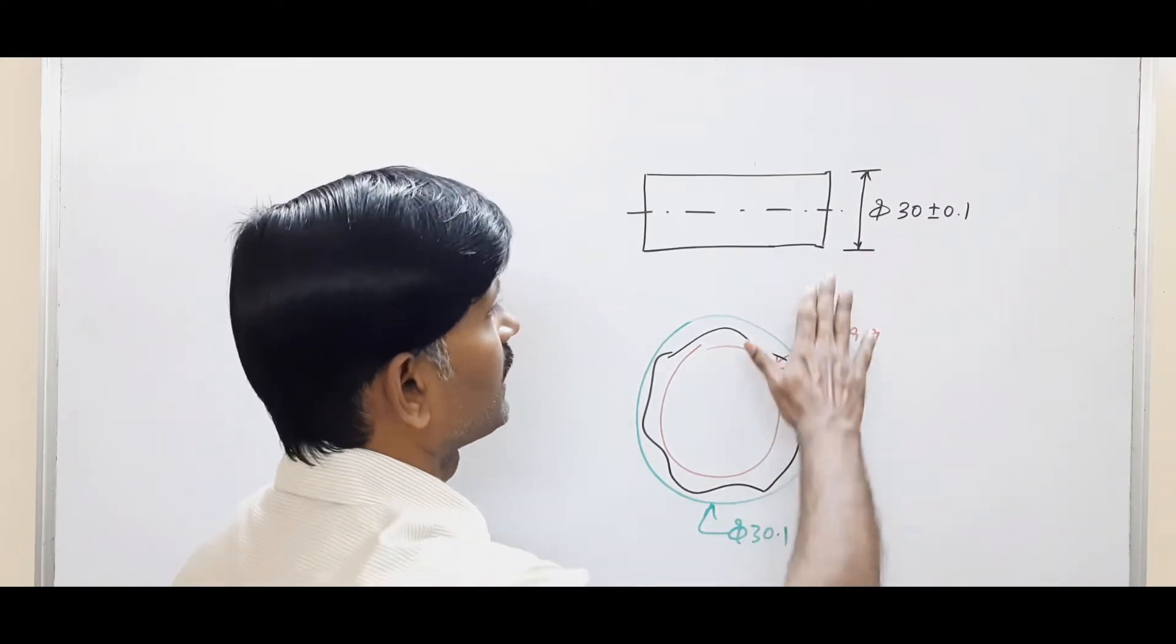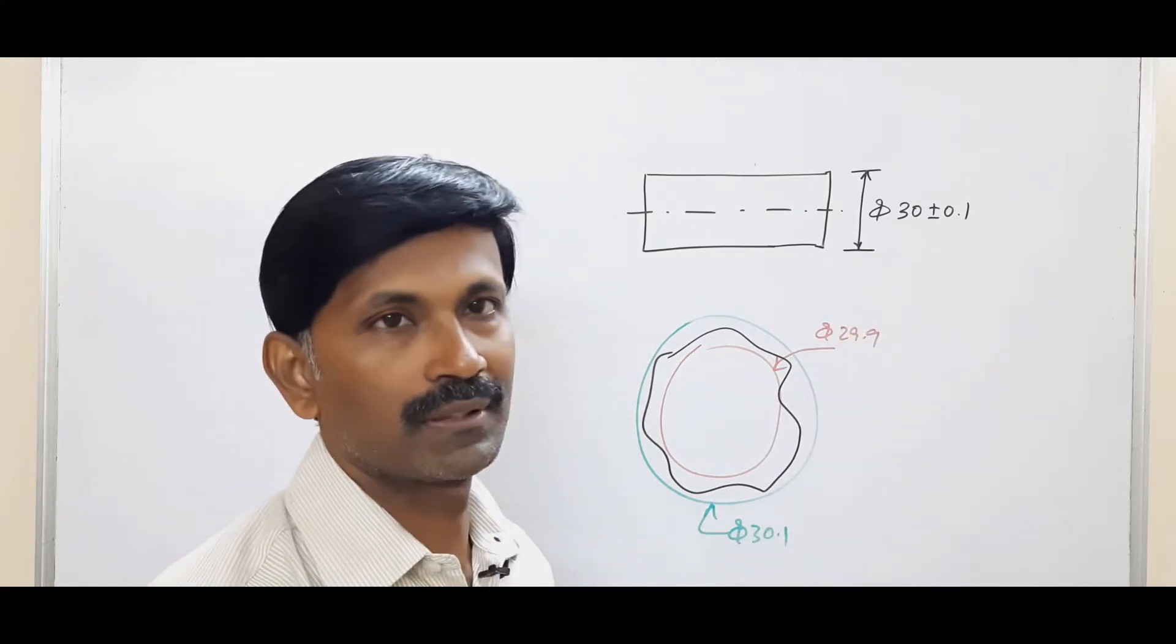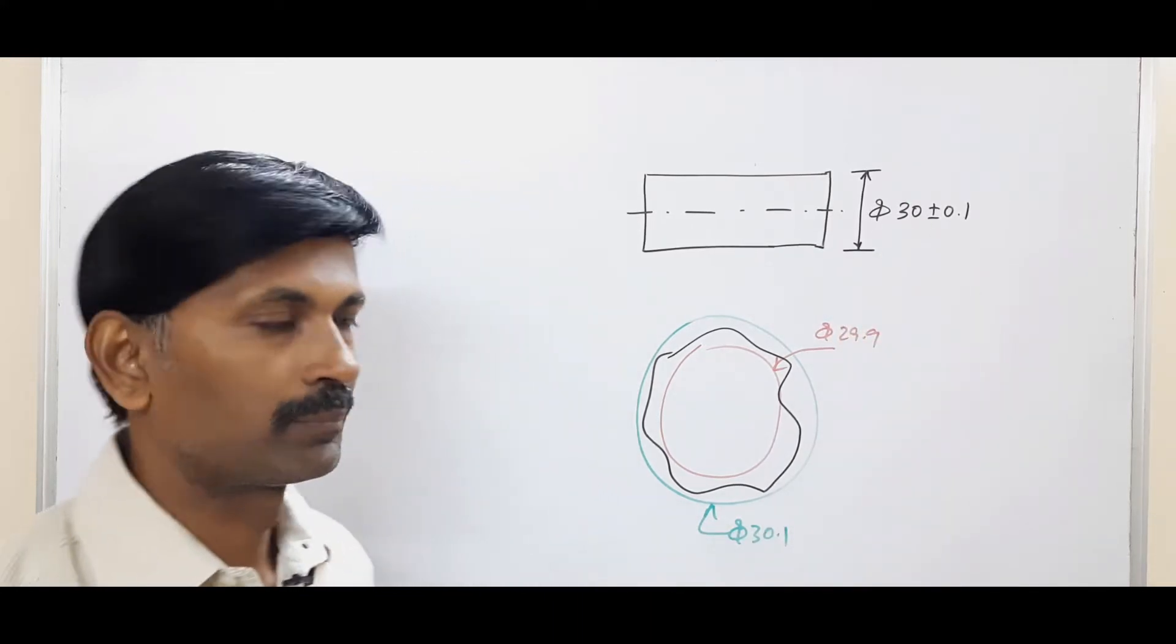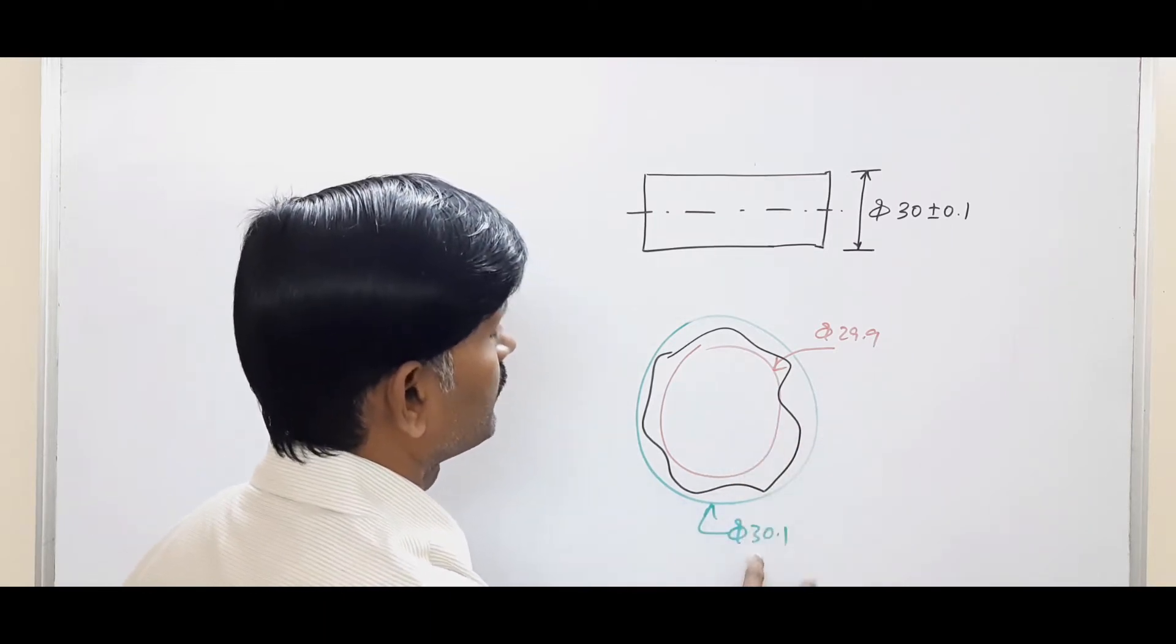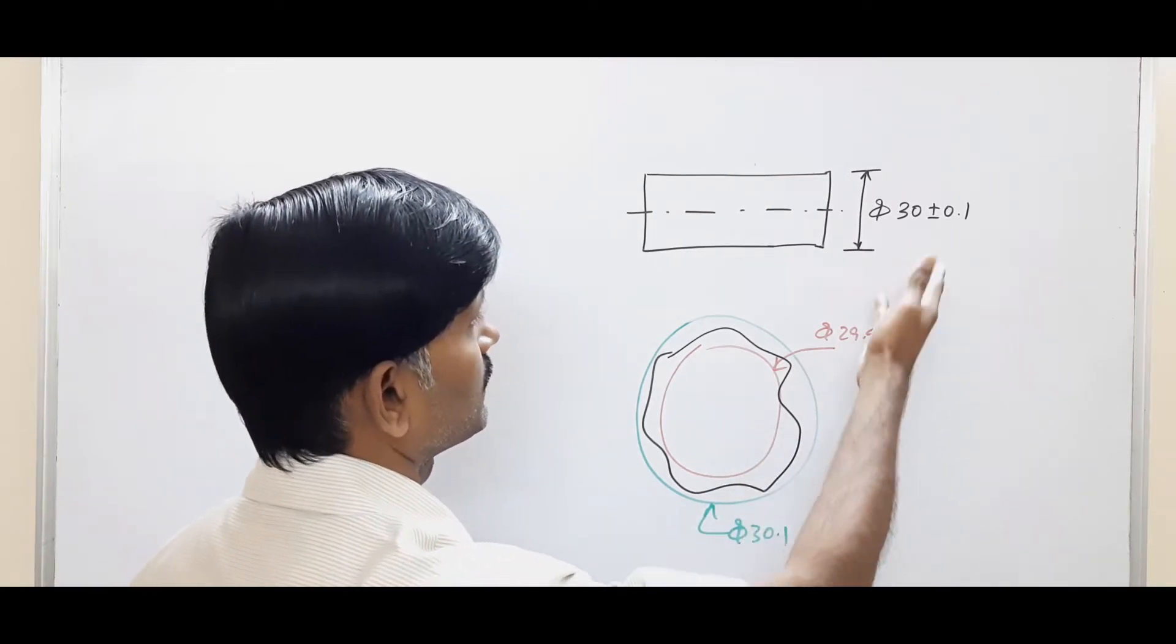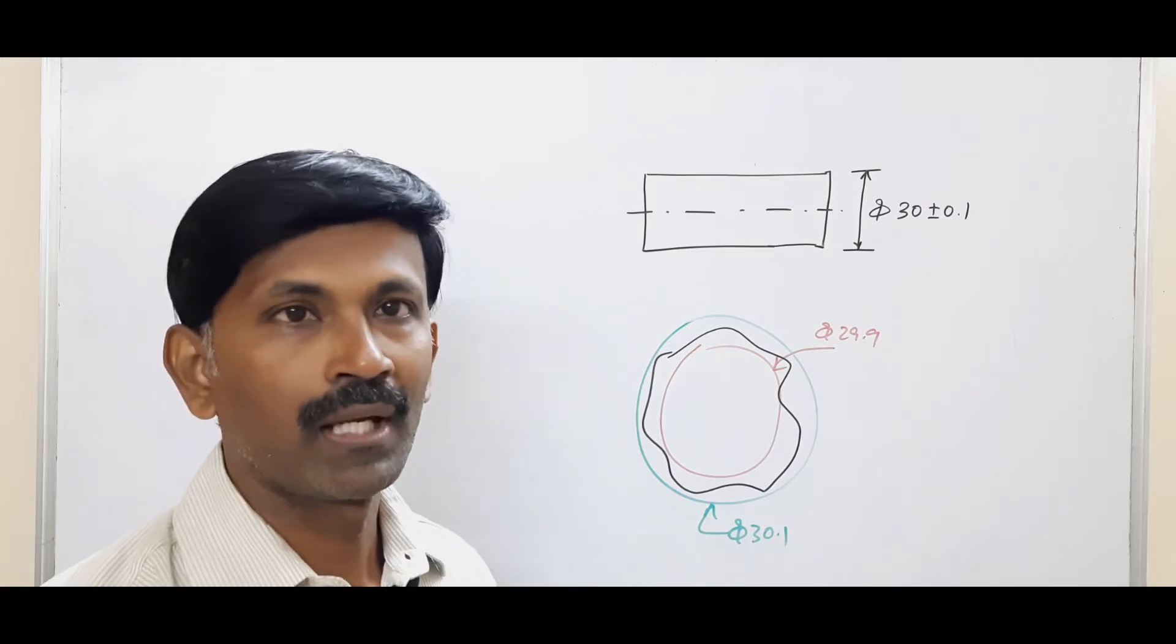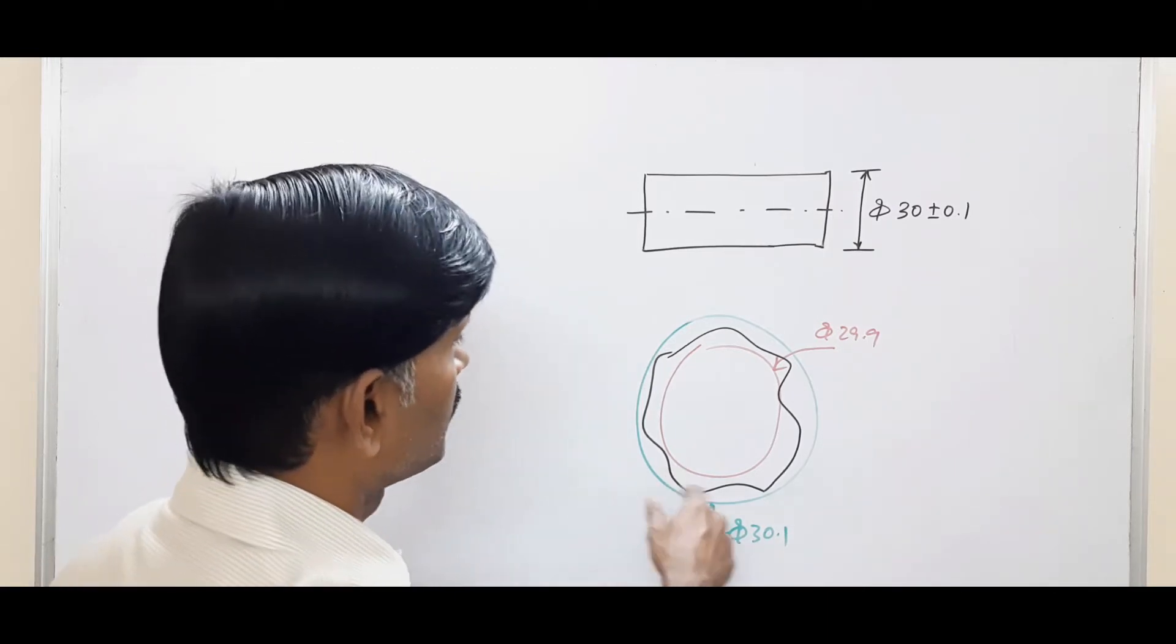Whenever we have a limits of size dimension, then rule one applies. We have two coaxial circles of 30.1 and 29.9, which is the lower limit and the upper limit. The actual surface has to lie within these two coaxial circles.